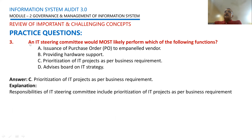Third question: an IT steering committee would most likely perform which of the following functions? Options include issuance of purchase orders to a panel vendor, provide hardware support, prioritization of IT projects as per business requirements, and advise board on IT strategy. Option D — advise board on IT strategy — is the IT strategy committee's role. Option B is out. The correct answer is option C — prioritization of IT projects as per business requirements — as that is the steering committee's monitoring and implementation role.